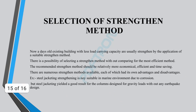For the selection of a strengthening method, nowadays old existing buildings with less load-carrying capacity are usually strengthened by applying a suitable strengthening method. There is a possibility of selecting a method without comparing for the most efficient option. The recommended strengthening method should be relatively more economical, efficient, and time-saving. There are numerous strengthening methods available, each with its own advantages and disadvantages. For example, steel jacketing is not suitable in a marine environment due to corrosion, but steel jacketing yields good results for columns designed for gravity loads without any earthquake design.